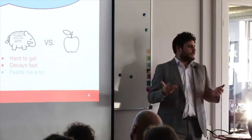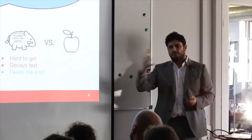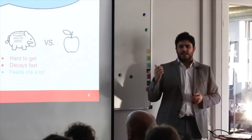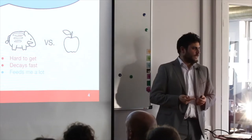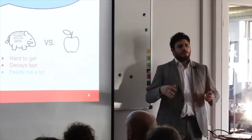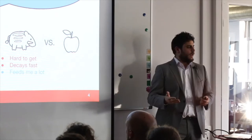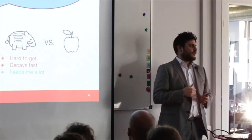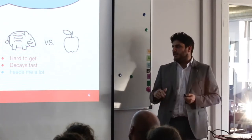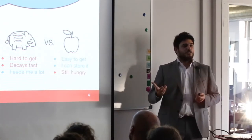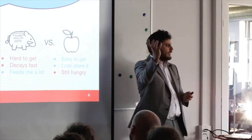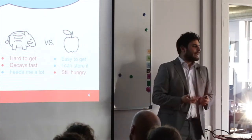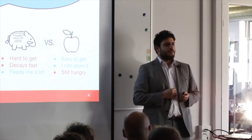Let's see. A boar is hard to get, hard to hunt, right? You have to get him. He will not come to be eaten. It decays fast. So you are not able to store it for a long period of time. The good point is that when you eat it, you're fed for quite a long time. However, an apple is easier to get. You just go to the tree and grab it. You can store it for a longer time than the wild boar, but after you eat one, you're probably hungry again.